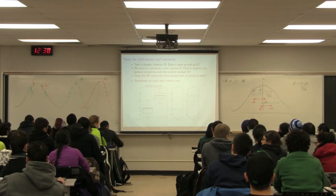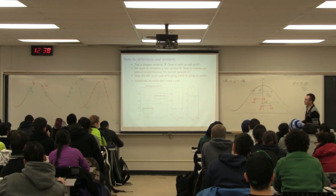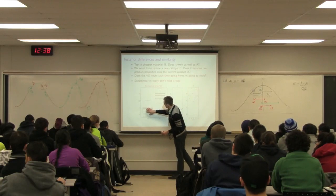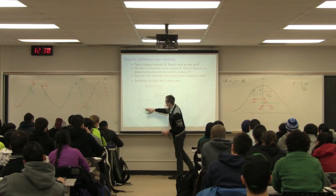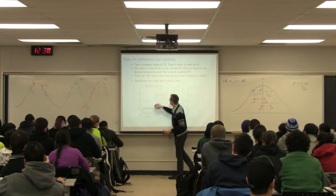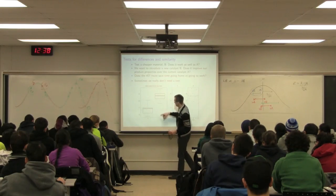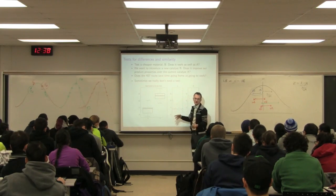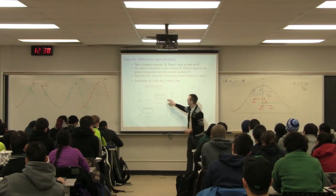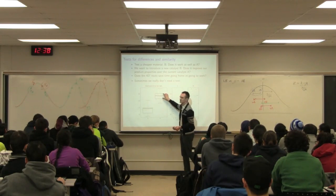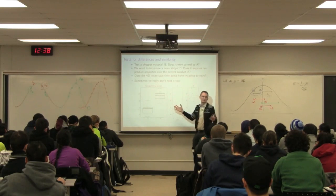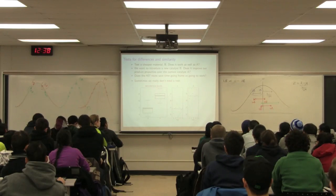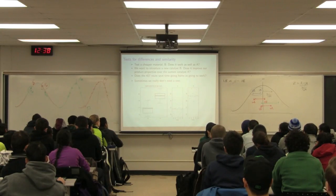Here's an engineering example. The yield for my batch process with system A is around 68-69%. The yield for my system with protocol B — a different way of running the system — is now around 88%. No one needs to do a statistical test to prove that A and B are different.